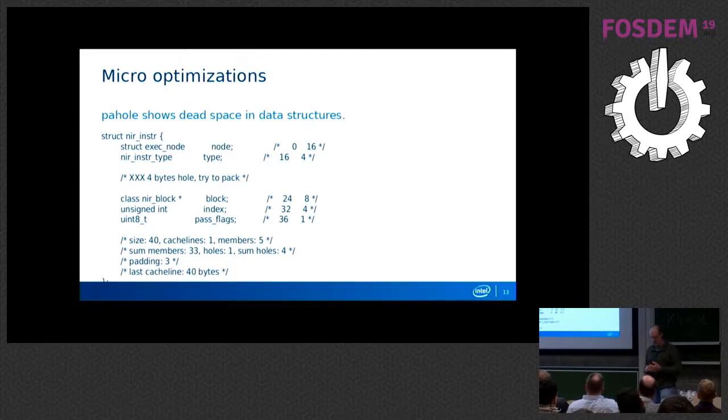So in this case, what I did is I marked the enum for nir_instr_type as packed. So that instead of taking up a full int, it would only be a byte. And I shuffled some things around. I think I moved the block pointer up to right after the exec node. And then basically sorted all of the fields by the size of the underlying type. And that eliminated all the padding. And I think it cut eight bytes off the size of the structure, four or eight because of padding. And it adds up.